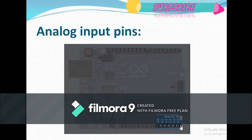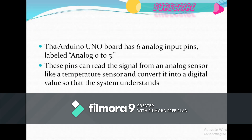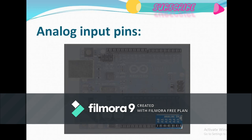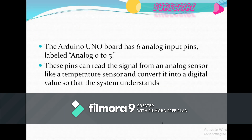The next component is the analog input pins, labeled A0 to A5 — meaning it has 6 analog input pins. These pins can read signals from analog sensors like a temperature sensor and convert them into digital values so that the system understands them.